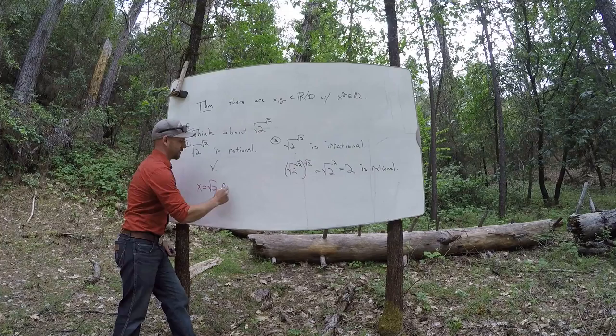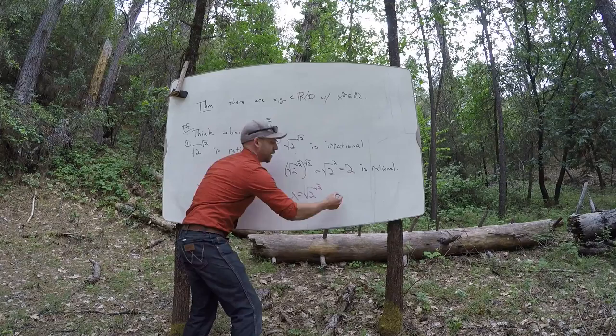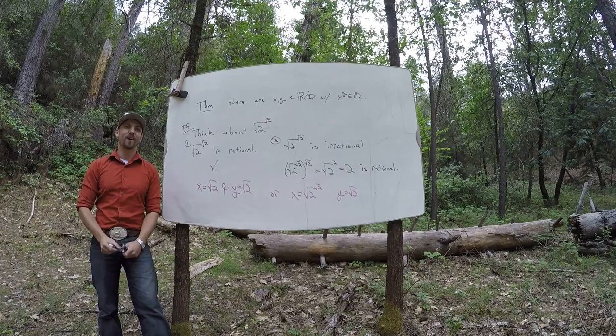So one of my solutions is x is the square root of 2 and y is the square root of 2. Or, x is the square root of 2 to the square root of 2 and y is the square root of 2. So we don't know which one, but we know one of them has to be.